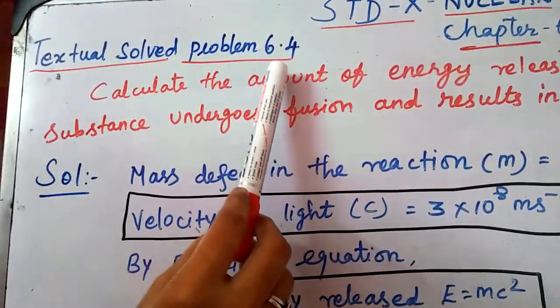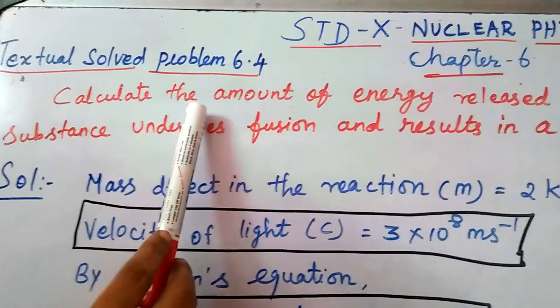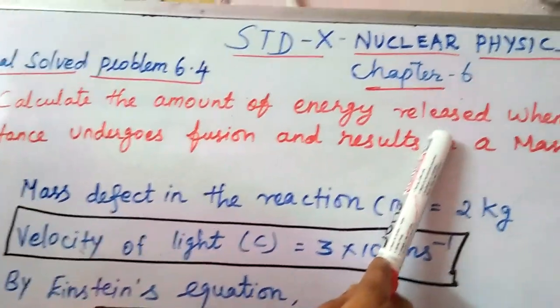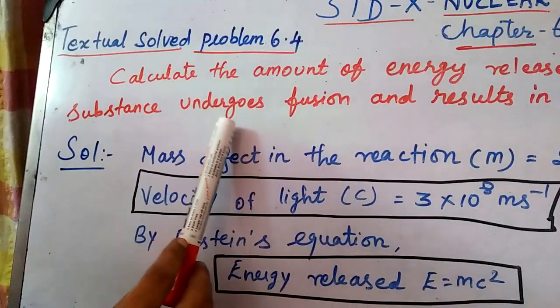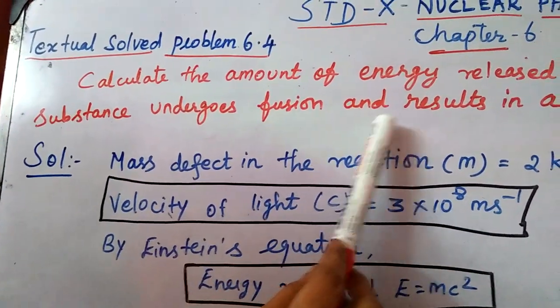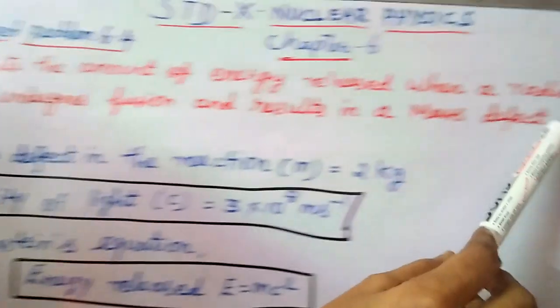Textual Solved Problem 6.4. Calculate the amount of energy released when a radioactive substance undergoes fusion and results in a mass defect of 2 kg.